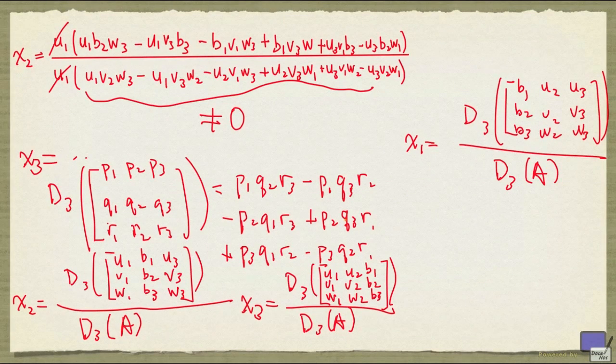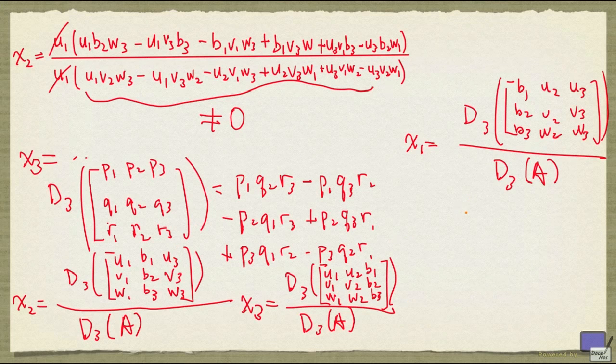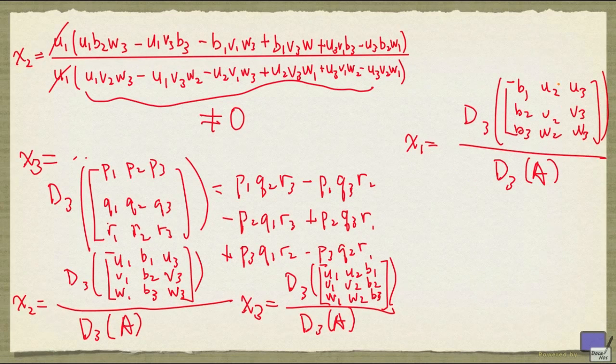So I've left out quite a few details. The details can be easily filled in as long as you have the patience to go through the arithmetic. Now the key is that once I've defined this d3, you can see a pattern in x1, x2, x3. Because in the denominator, it's always d3 of A. And in the numerator, you take that coefficient matrix. If you're looking at x1, you replace the first column by the right-hand side. Looking at x2, you replace the second column by the right-hand side. And for x3, you replace the third column by the right-hand side. And as you might suspect, d3 is the determinant of a 3 by 3 matrix.